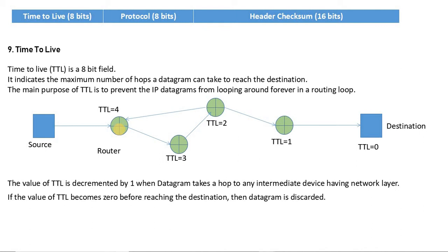The source will be notified because, as we discussed in the last topic, there is a particular error notification mechanism. So if there is an error from the packet, then the source will be able to know. The main thing here is that the Time to Live decides how many hops a single packet can take to reach the destination.